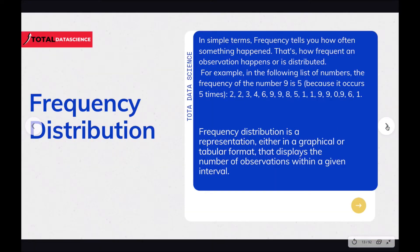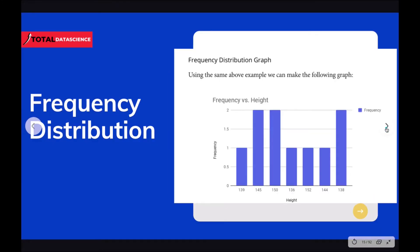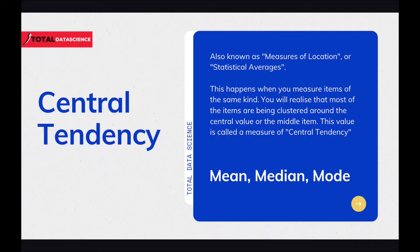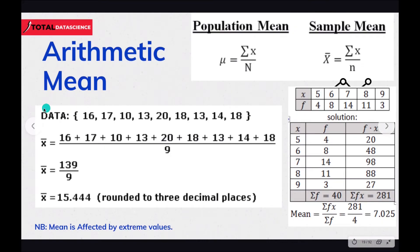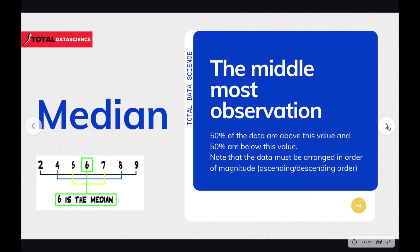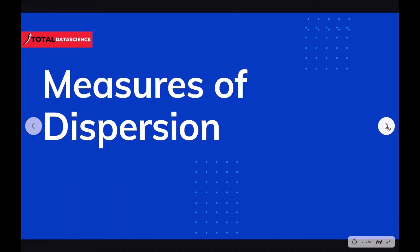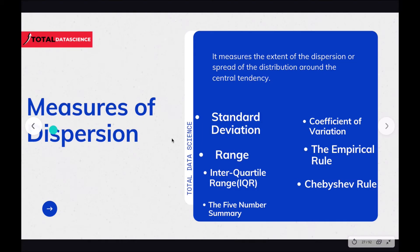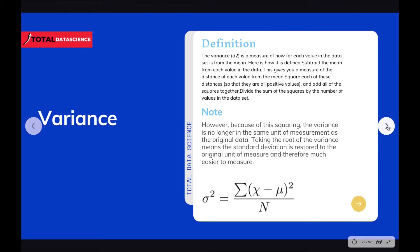We'll cover frequency distribution with practical examples, then central tendency — including the mean, median, and mode — one by one with examples. We'll also consider measures of dispersion such as standard deviation, range, interquartile range, the five-number summary, coefficients of variation, and the empirical rule. Some of these are concepts you really need to master as we progress, and we'll dive deep into all of them with examples.